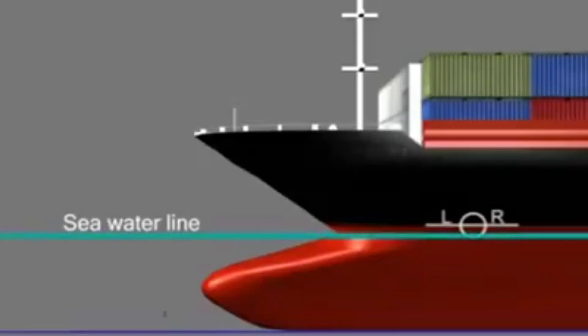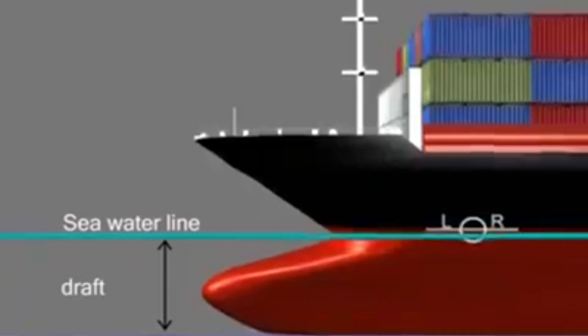Plimsol line mark allows one to know the safe draft. Draft is the vertical distance between the water line and the bottom of the hull or keel. The heavier the load, the more is the draft length.